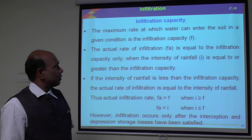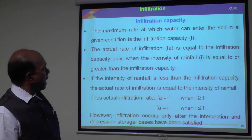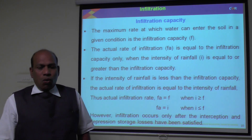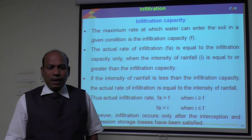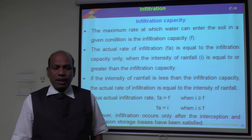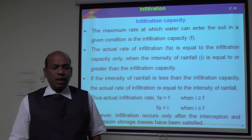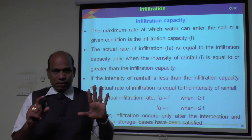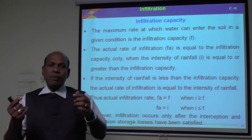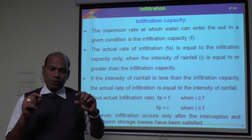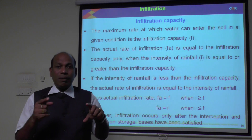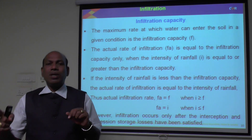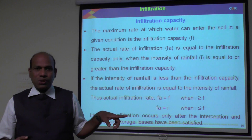Infiltration capacity is the maximum rate at which water can enter the soil in a given condition. The actual rate of infiltration is equal to the infiltration capacity of the soil when the rainfall intensity is more than or equal to the infiltration capacity of the soil.